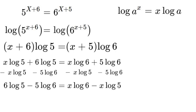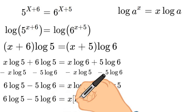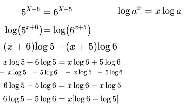Once we've done that, on the right side of the equation, we can factor out the x. So that will look like this. We will pull out that x. So we can have x times log 6 minus log 5.